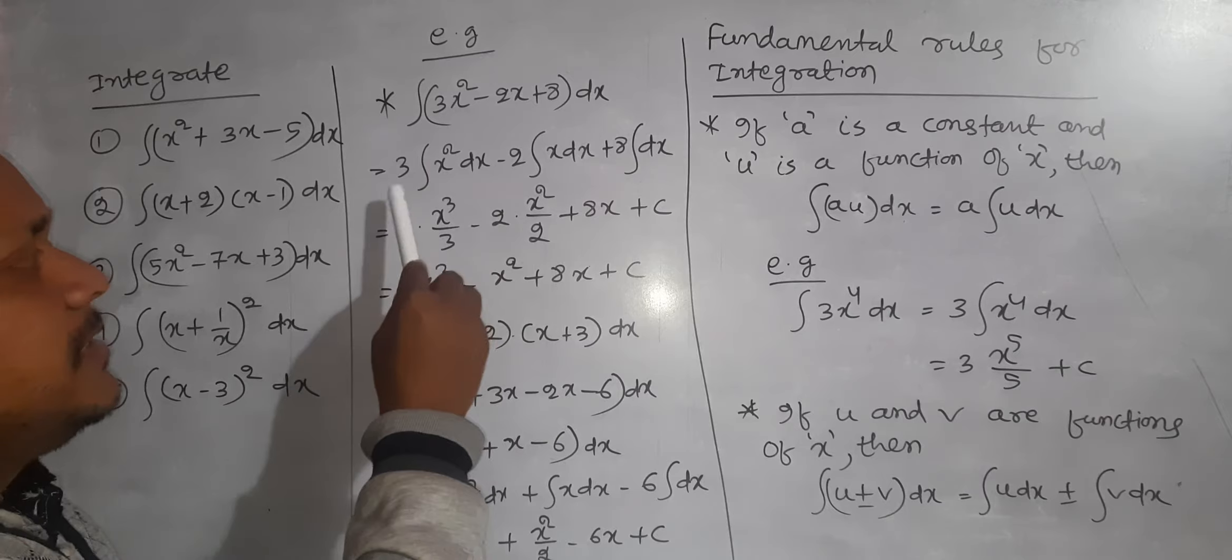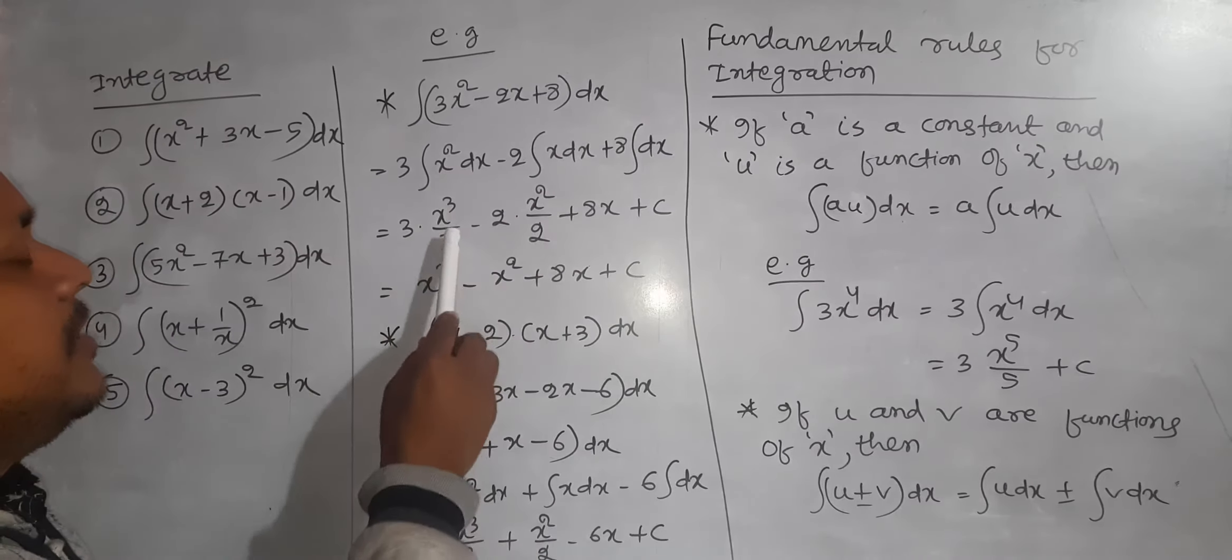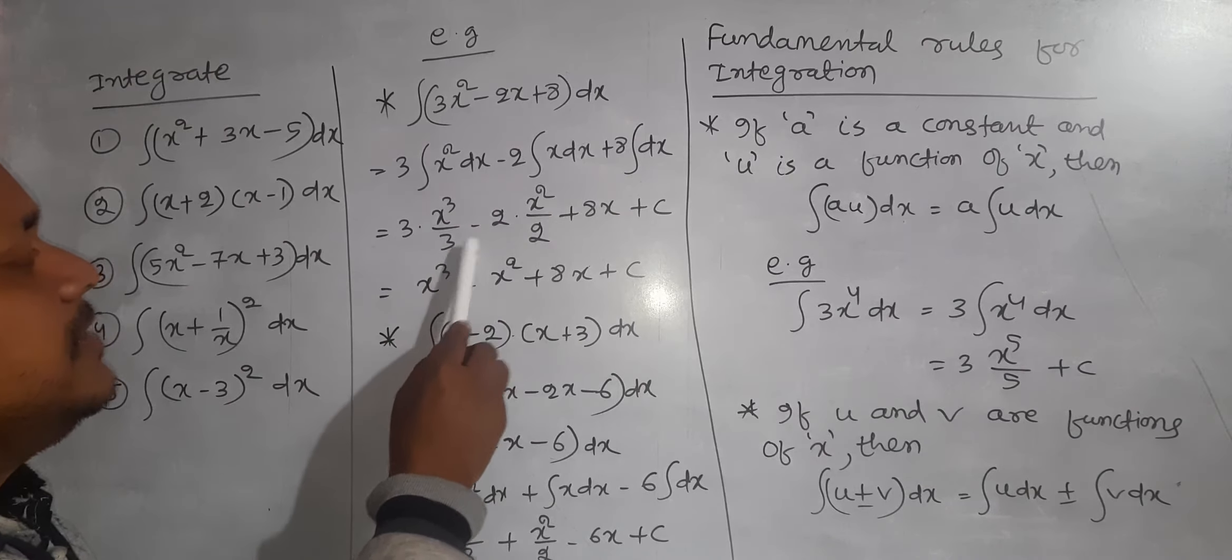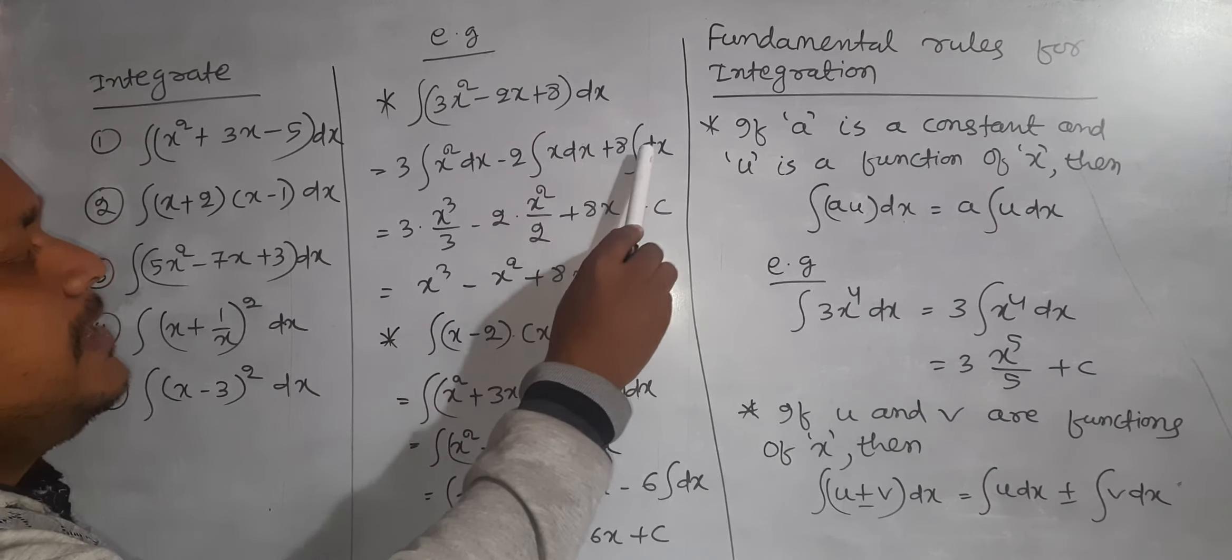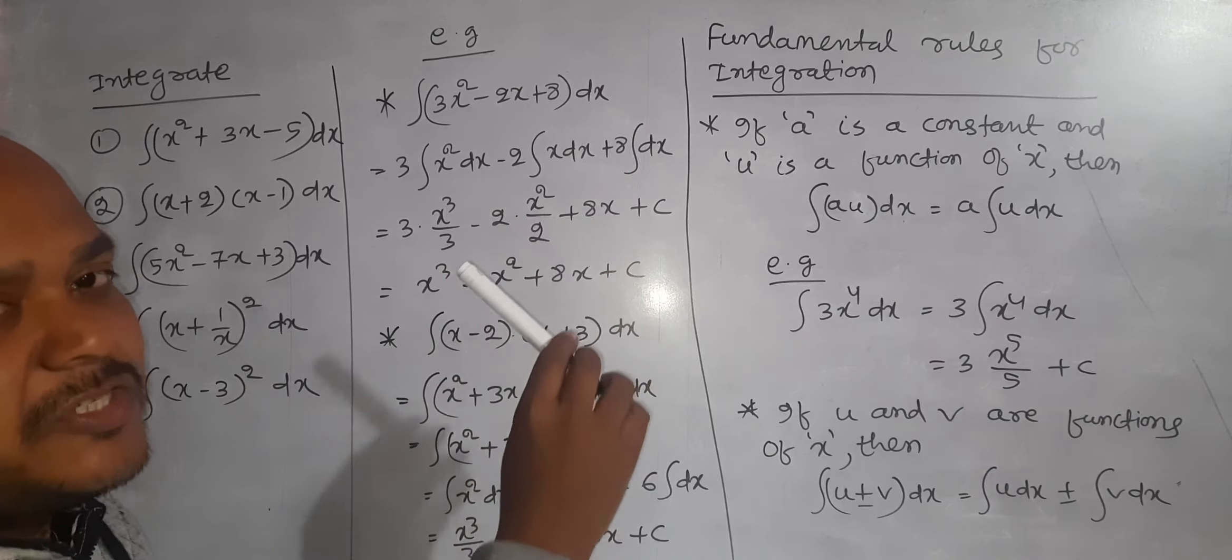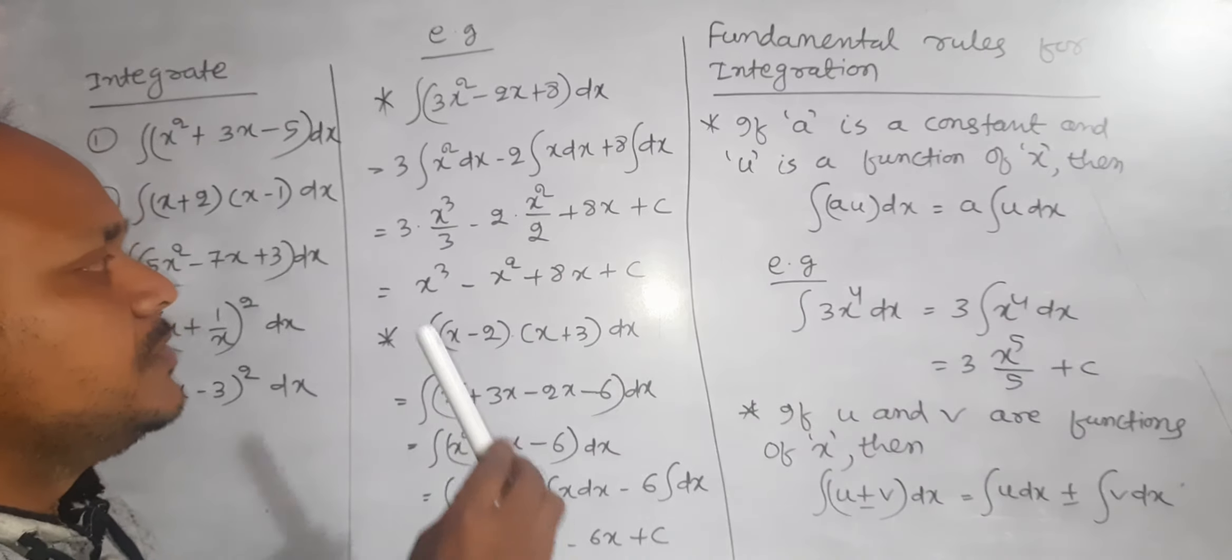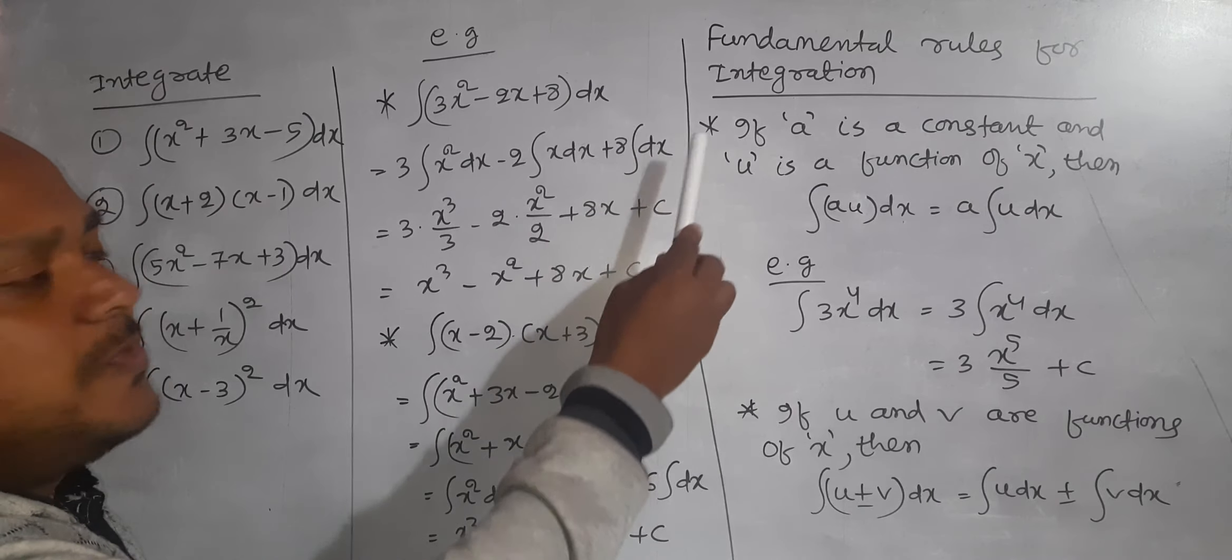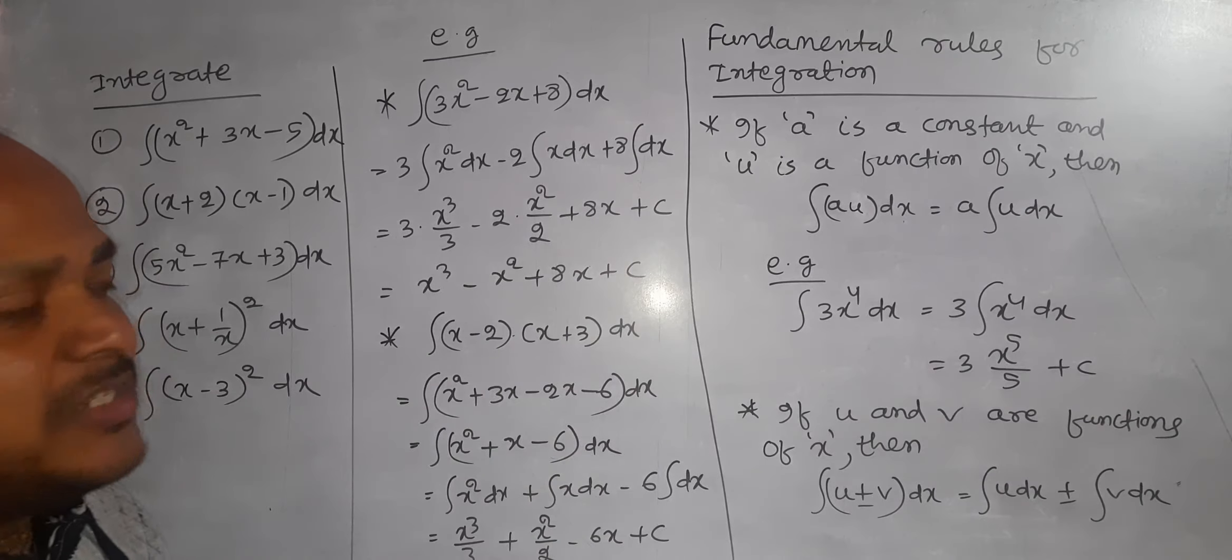The constant things we take out from the integration. So, here x to the power n, we put the x to the power n formula: 2 plus 1 is 3, x cube by 3. Here, the power is 1, so 1 plus 1, that is 2, x square by 2. Here, only the integration is there. If there is nothing in the integral, we can put 1. So, x to the power 0, 0 plus 1 means x by 1, 8x. Then constant of integration C.